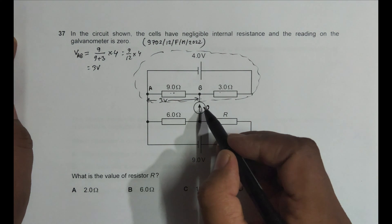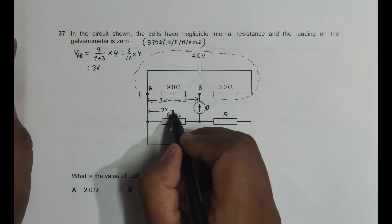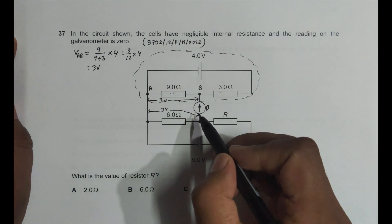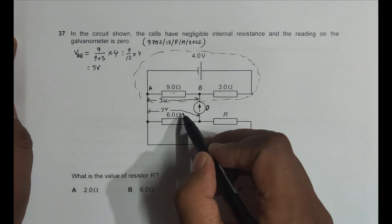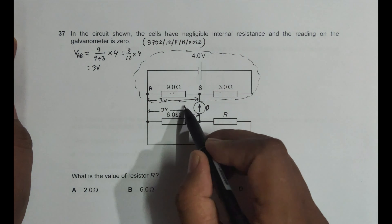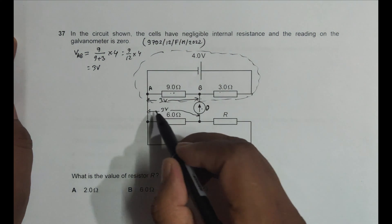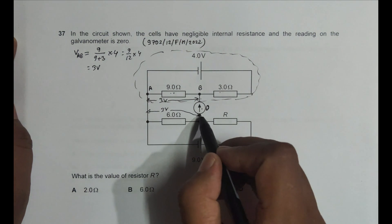Now if this galvanometer reads zero, it means that the PD here also should be equal to 3 volt. It means the PD here also should be equal to 3 volt, because if this voltage were higher, current would have gone like this. So since it reads zero, current is zero.